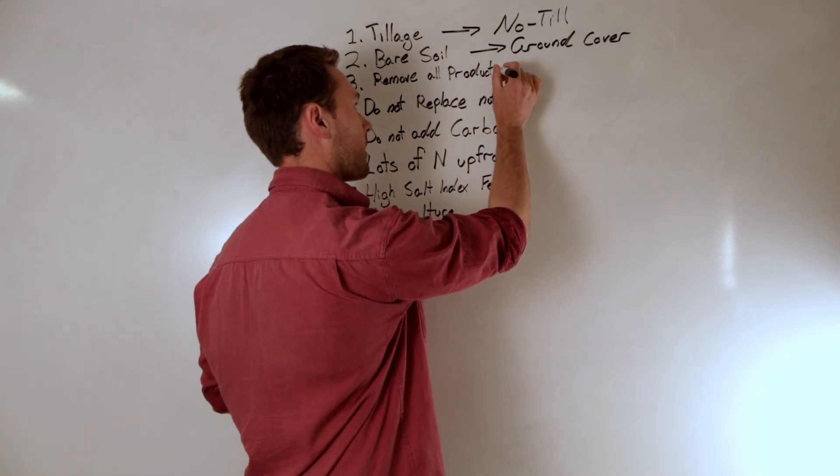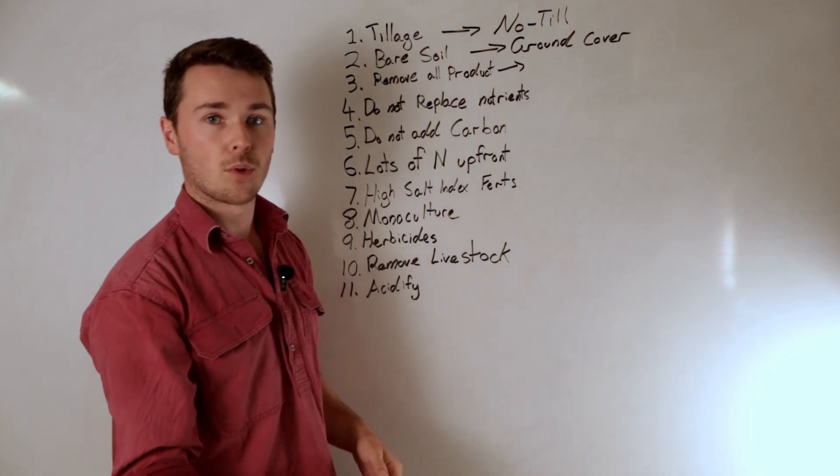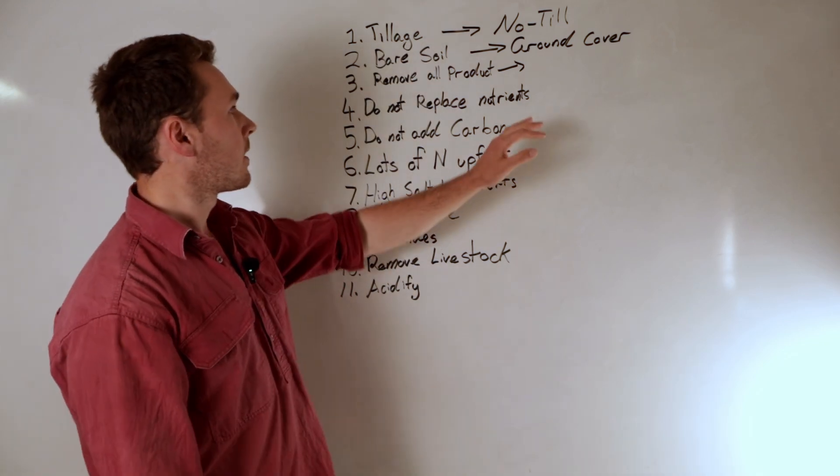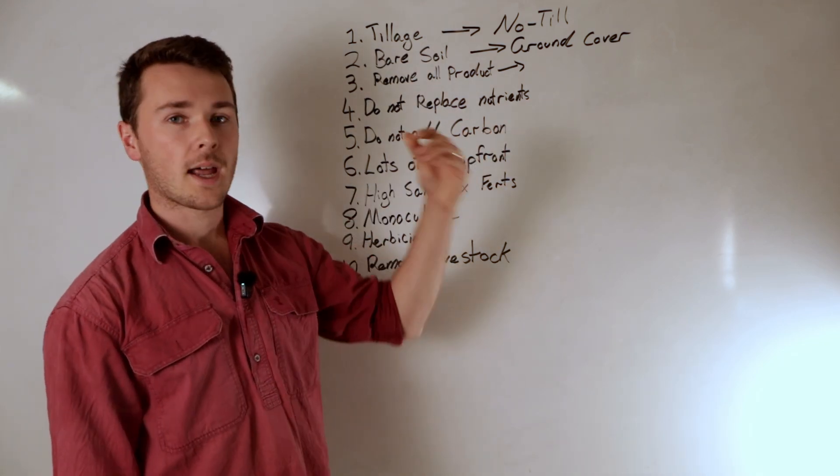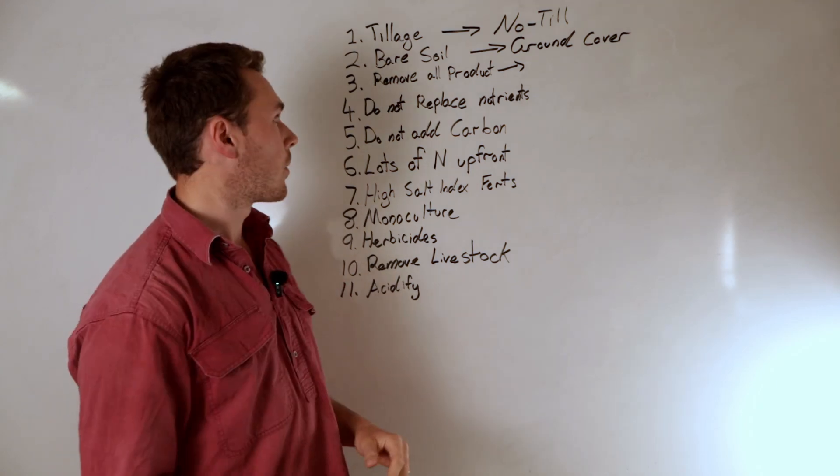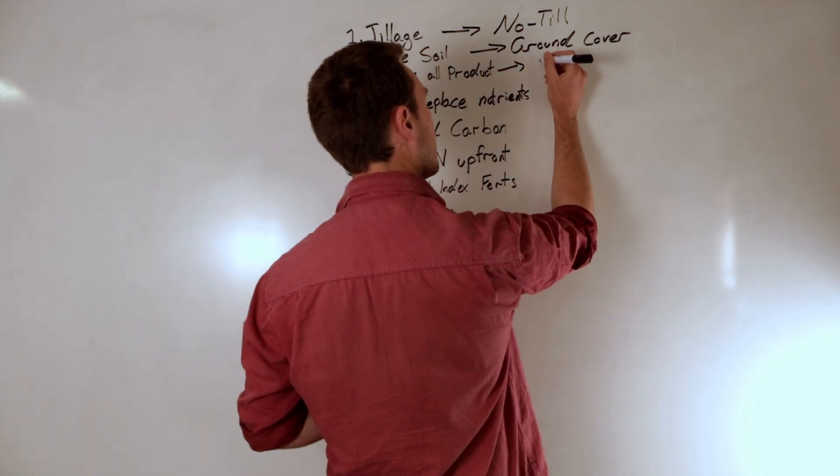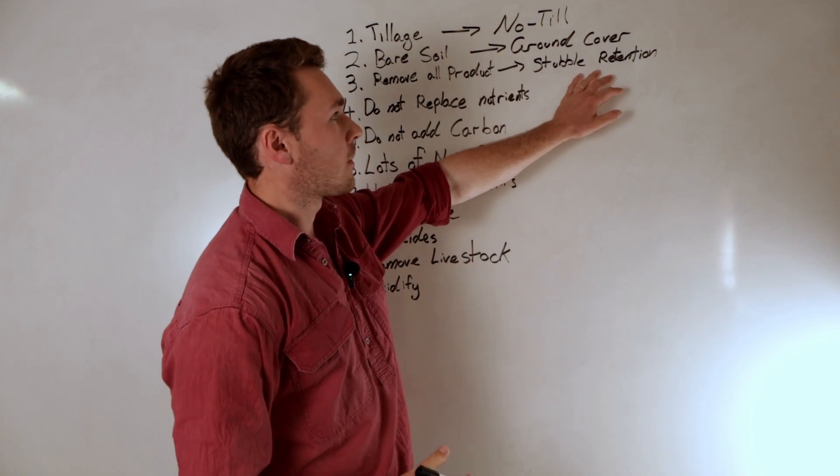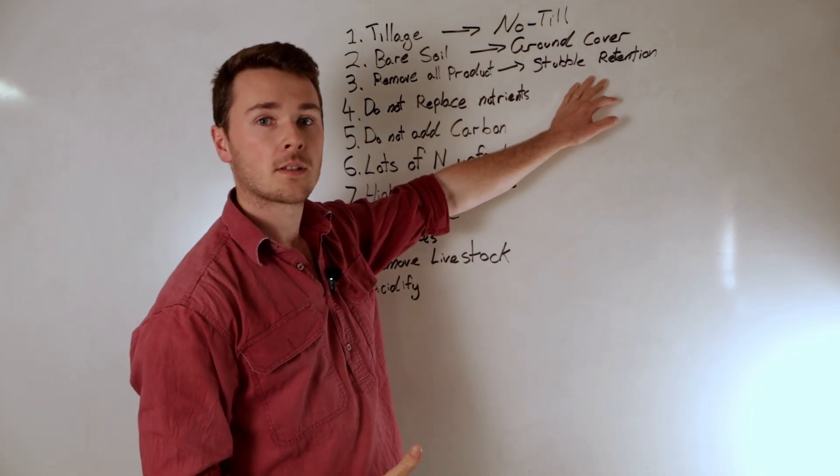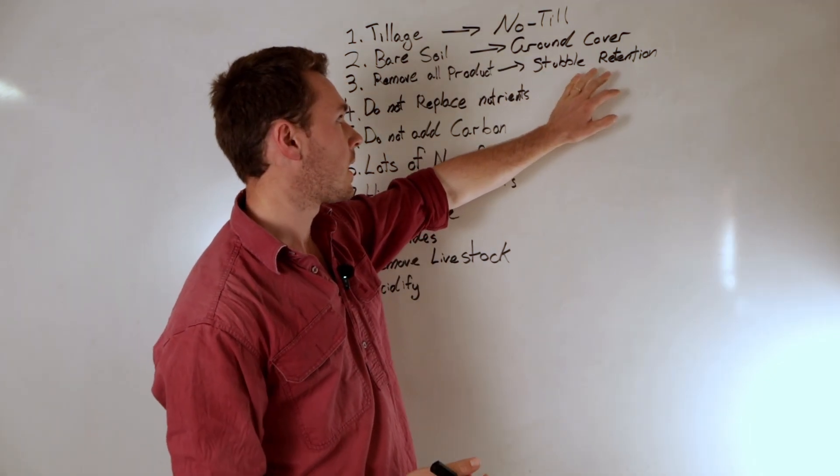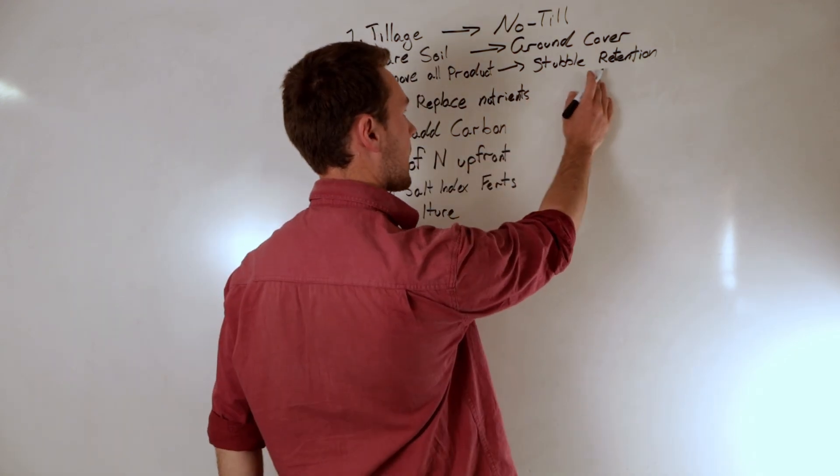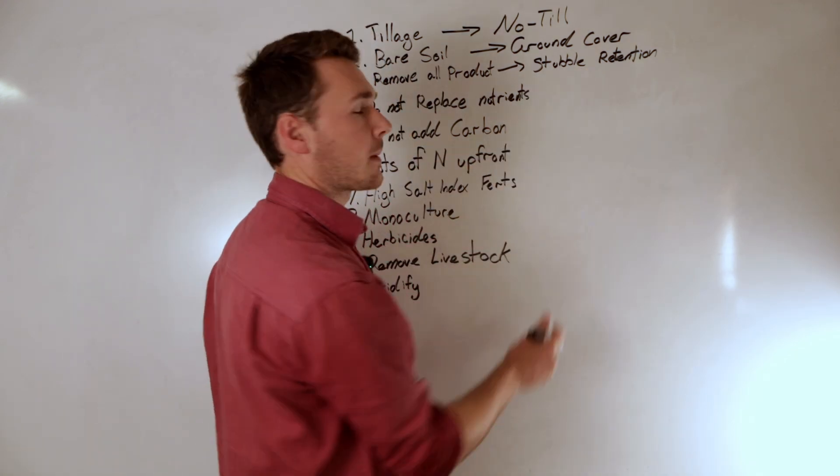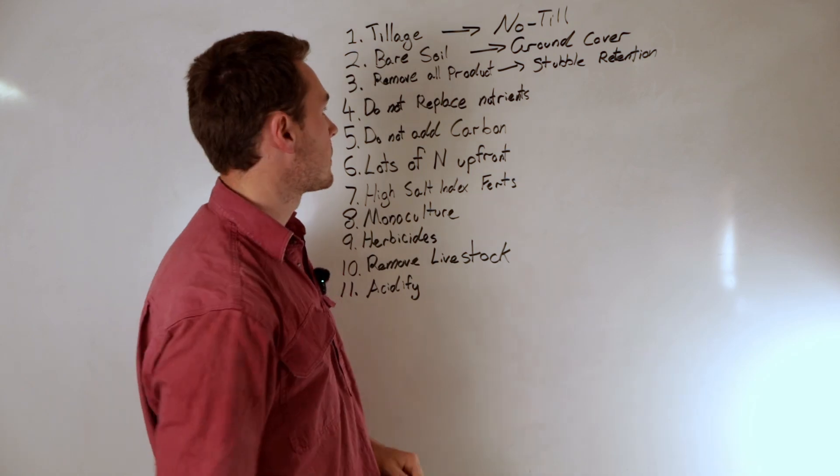Removal rates. So again we have to remove product so we can sell it. But there's other product that we don't have to remove and it's simply not worth it. So that would be stubble retention. And likewise if you're an orchard it means potentially trying to compost your trimmings, unmarketable fruits. Again we don't want to make hay. We want to be able to graze everything. So keeping as much product on farm as possible.